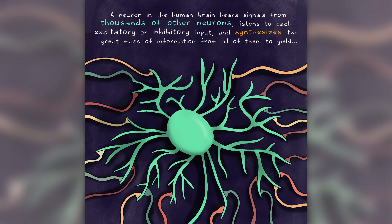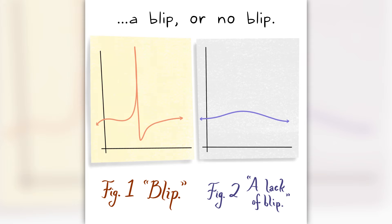A neuron in the human brain hears signals from thousands of other neurons, listens to each excitatory or inhibitory input, and synthesizes the great mass of information from all of them to yield a blip or no blip.